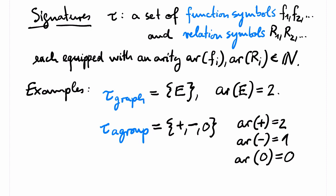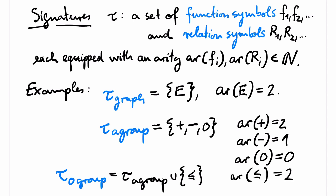So this is a signature that only has function symbols. Then there are also signatures where both function symbols and relation symbols appear, like for example the signature of ordered groups, where we have additionally a binary relation symbol.